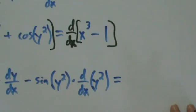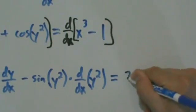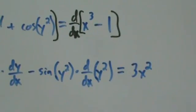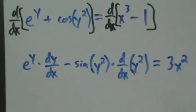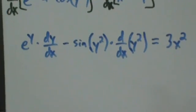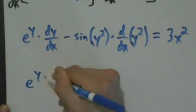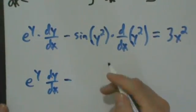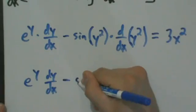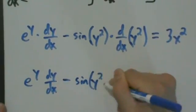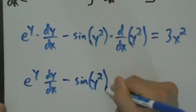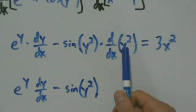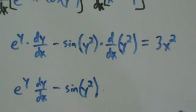On the right side, nothing new: the derivative of x cubed minus 1 is just 3x squared. So now we have e to the y dy/dx minus sine of y squared times d/dx of y squared equals 3x squared. Now we need to simplify the left side a little more — specifically we need to expand d/dx of y squared.